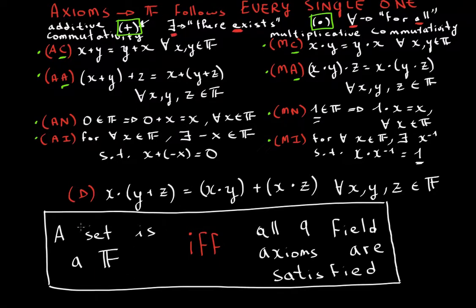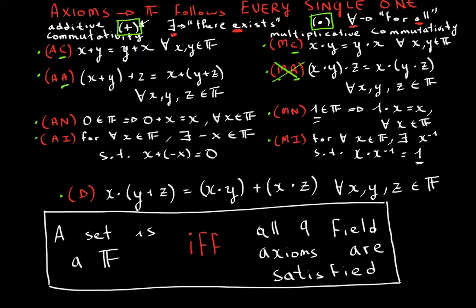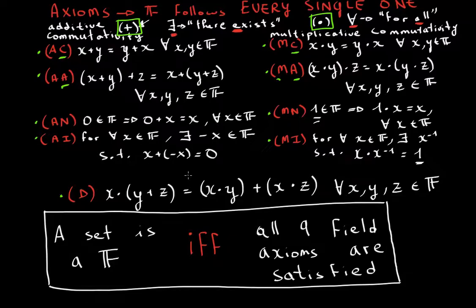If you don't understand this, you can watch the video a little more slowly or pause at places where you're confused. If for any reason any one of these axioms fails, whatever set you're trying to prove or have been given cannot be called a field. I hope this video made sense to you. In the next video we will explore the world of fields, because in real analysis, the real number system is indeed a field.